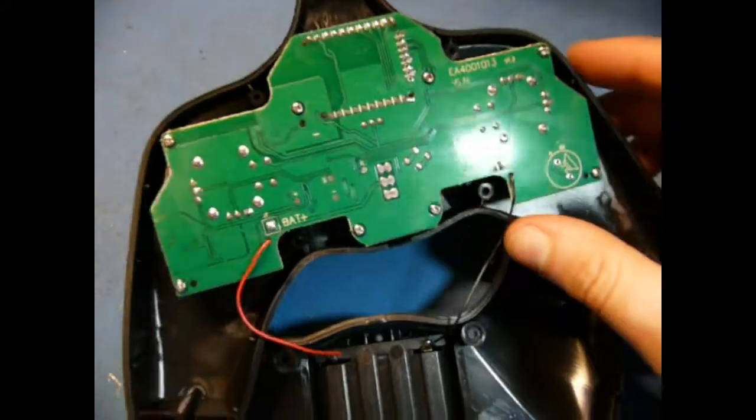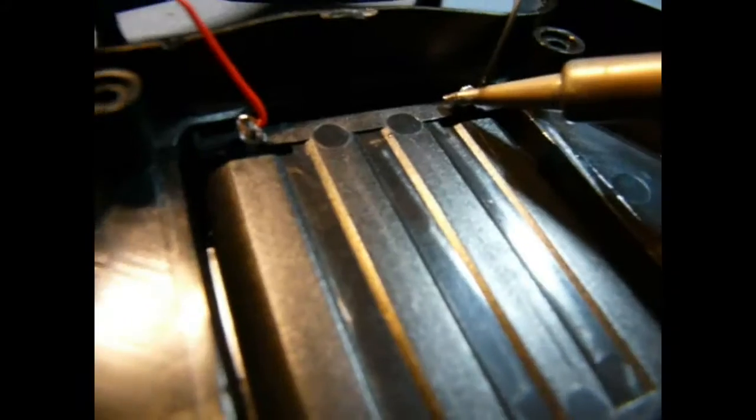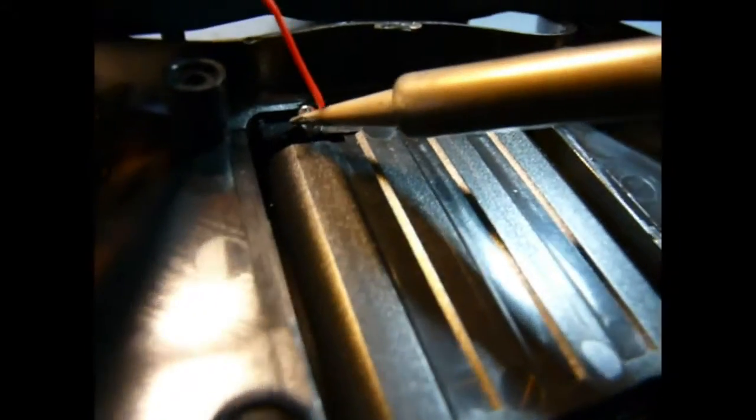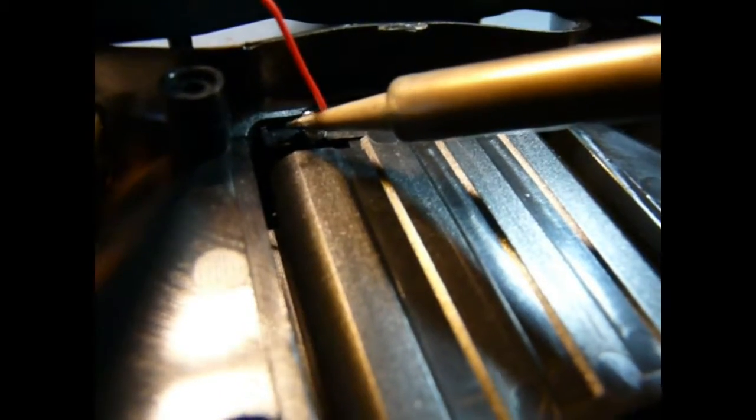So here's the controller opened up, just a few screws. The first thing to do is to remove the wires that hold the board to the battery compartment. Pretty simple. Try not to melt the case.